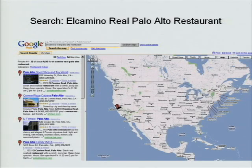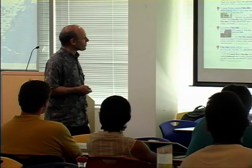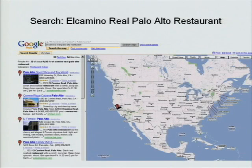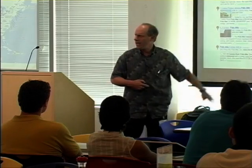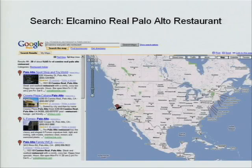I searched for 'El Camino Real restaurant' because there was a specific restaurant I was trying to find. However, somebody has grabbed your search and put a sports shop as the first thing on my restaurant search on El Camino, Palo Alto. And then some of these things aren't even on El Camino — the fourth result is the YMCA, which isn't a restaurant either. So that search got derailed right from the very first four things.